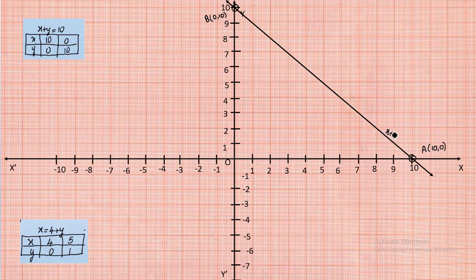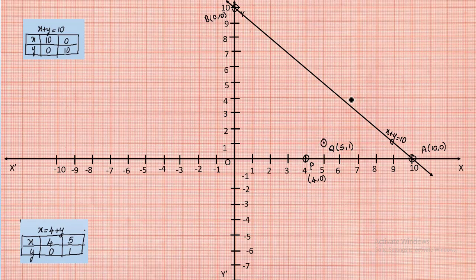From equation 2 (x = 4 + y), we plot point P at (4, 0) and point Q at (5, 1), then draw a line joining these two points. This line represents the equation x = 4 + y. Both equations are now represented as lines on the graph.